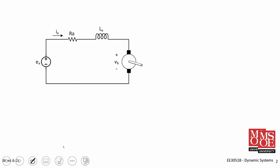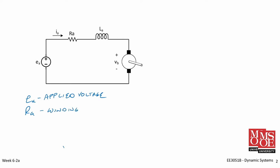Here's our DC motor model. Recall that E sub A is the applied armature voltage. R sub A is the winding resistance or the armature resistance. L sub A, because we have windings in coils of wire, is our winding inductance in our armature. V sub B is the back EMF that the motor derives as it starts to spin, and it is equal to the motor constant K sub B times the angular rate of rotation of this motor shaft, omega M.